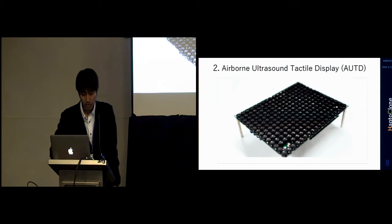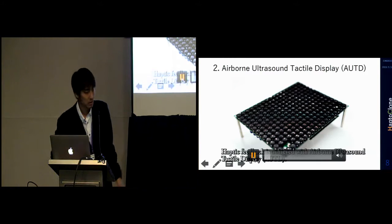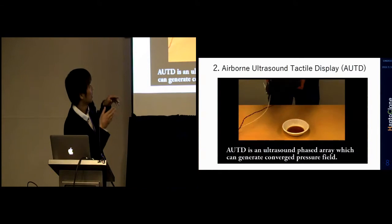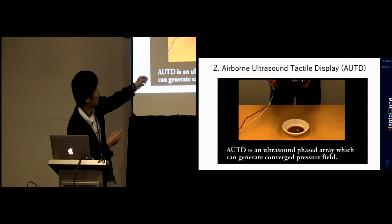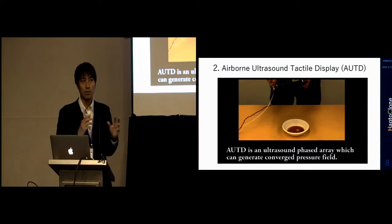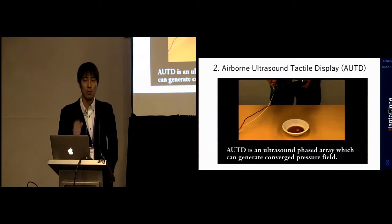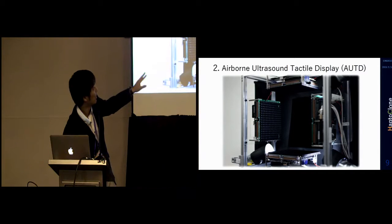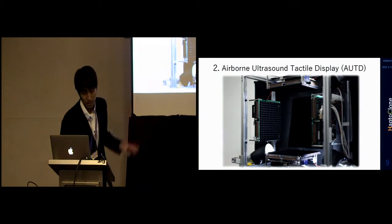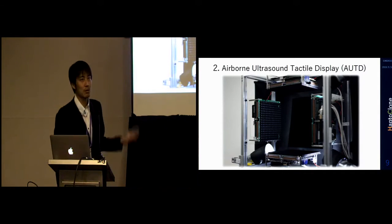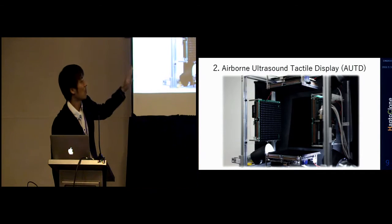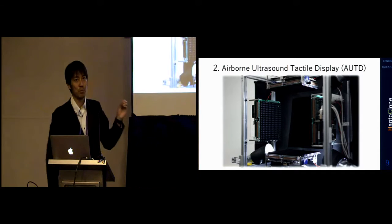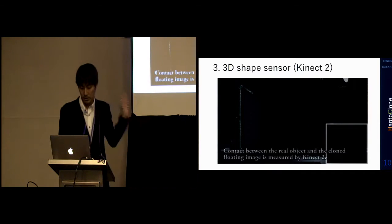The second key technology is the airborne ultrasound tactile display. This is a small transducer array of ultrasound. We can change the phase of each transducer to make a focus point in the air, and when we make the focus, we can give a force in the air. With this technique, we make force feedback in the air. In the Haptoclon system, we used four units of the AUTD system. Each unit has about 250 transducers, so one workspace has around 1,000 transducers. We control all phases of each transducer to make the focal point.